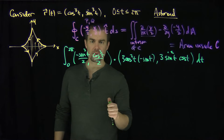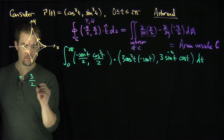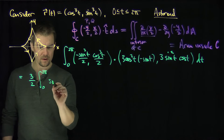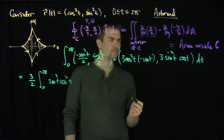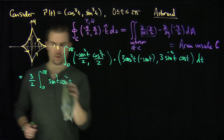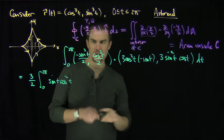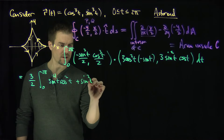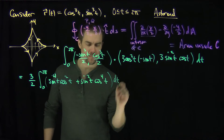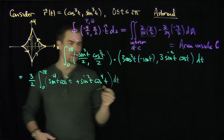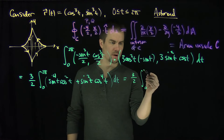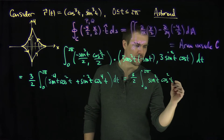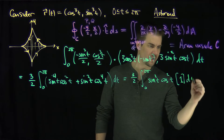Notice that there's a factor of 3 over 2 in everything, so let's pull that out. It's going to be 3 over 2 times the integral from 0 to 2π. We'll have sine cubed of t cosine squared of t on the first term, and the second term is going to be sine to the fourth power — because we have sine cubed times sine of t — plus sine squared t cosine to the fourth of t, dt. Both terms share a factor of sine squared cosine squared, so pulling that out leaves sine squared of t cosine squared of t times (sine squared plus cosine squared), which is just 1, dt.